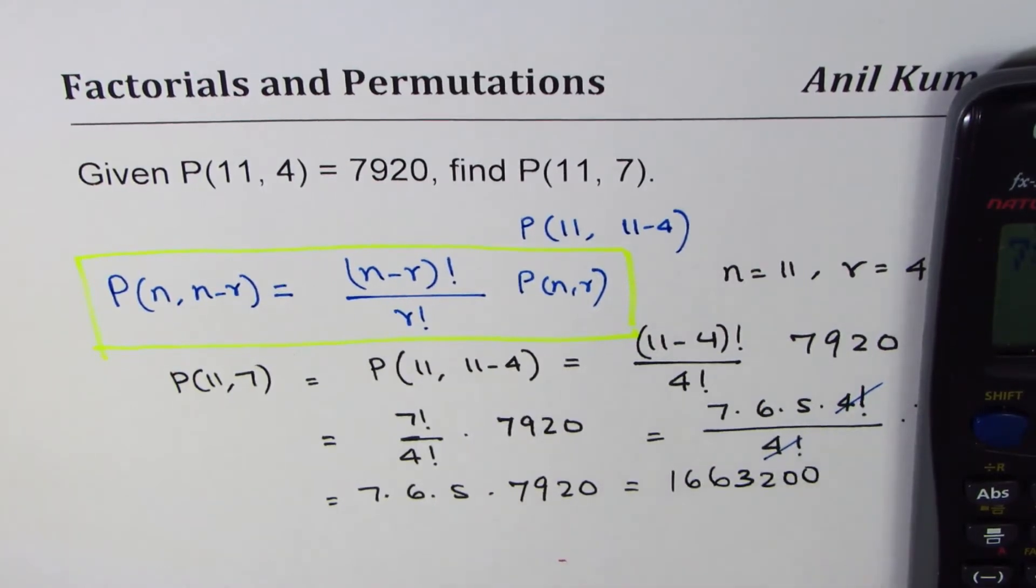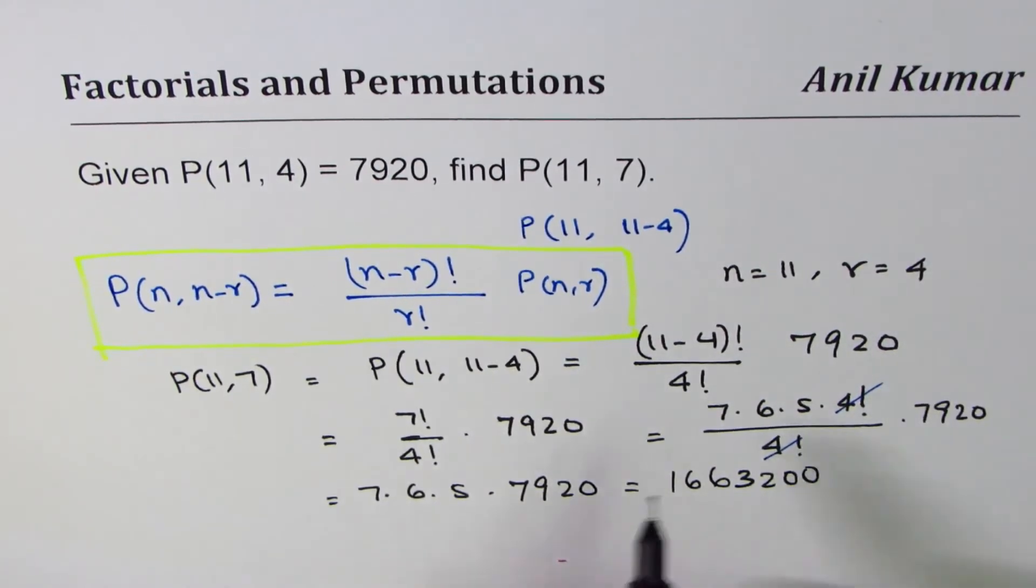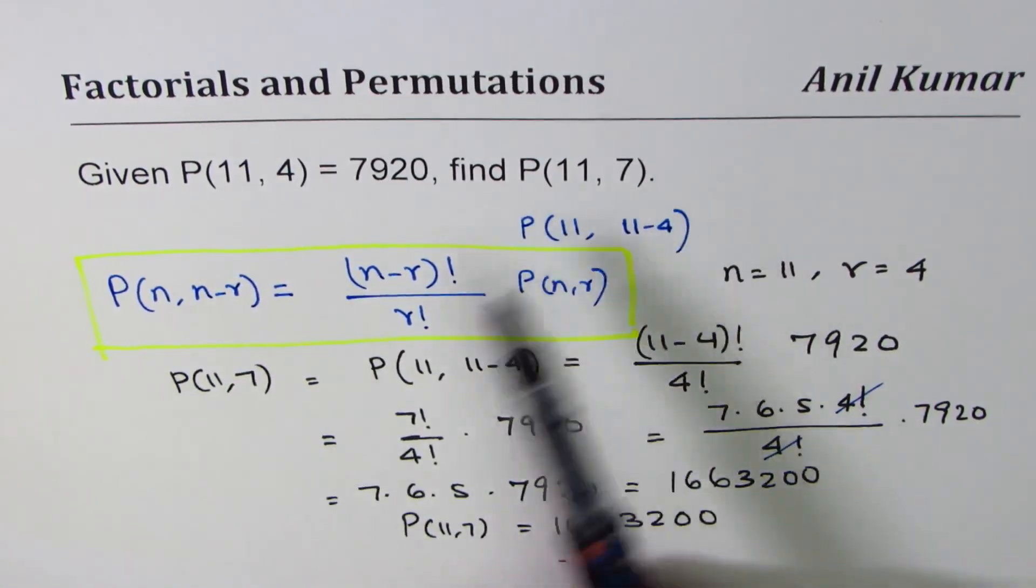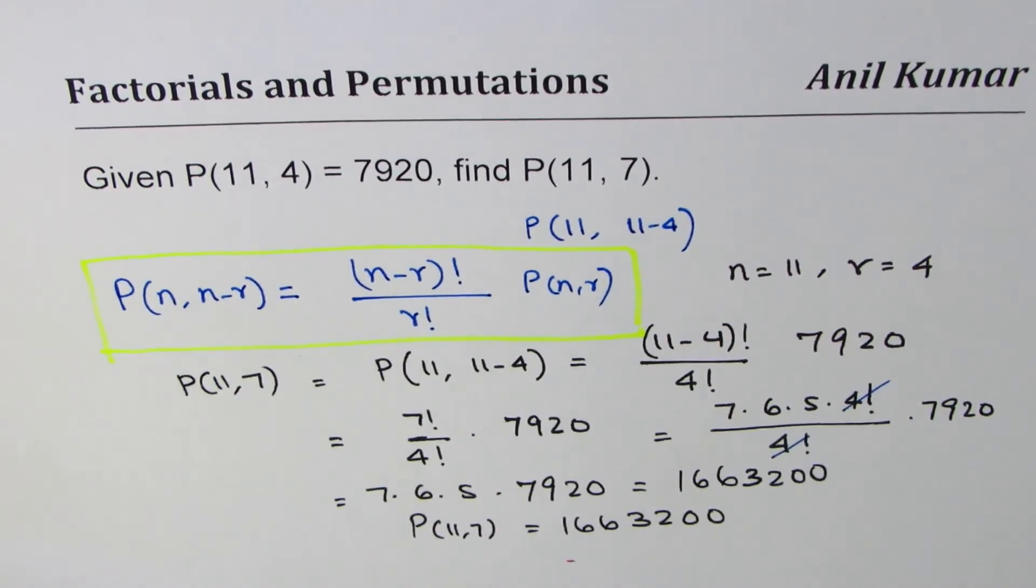So that's the value of P(11,7). So we can write P(11,7) equals 1663200. That is how you can use a formula and find this result. I'm Anil Kumar.